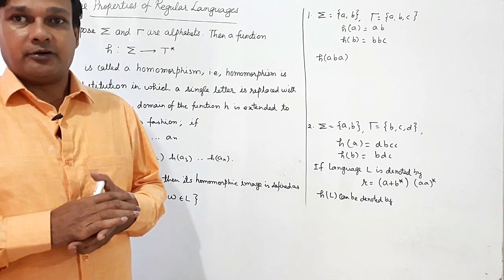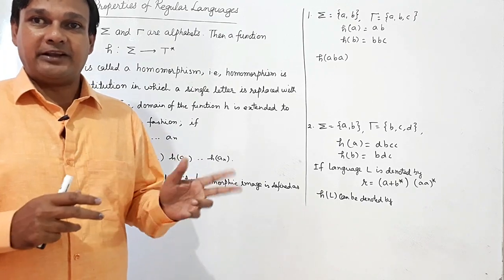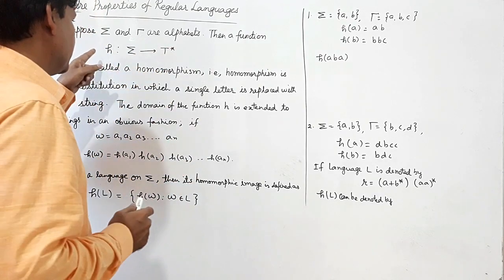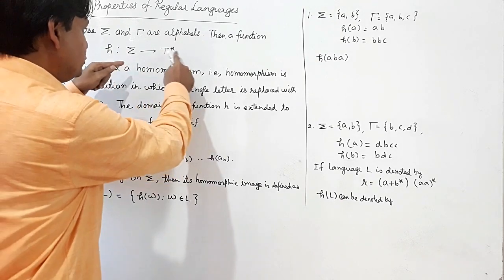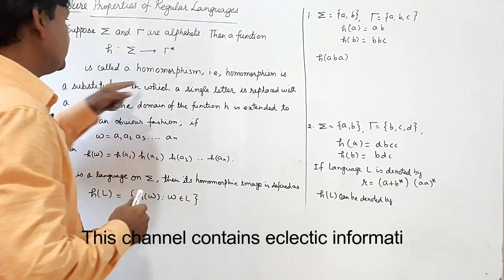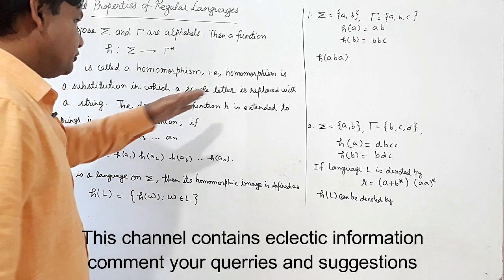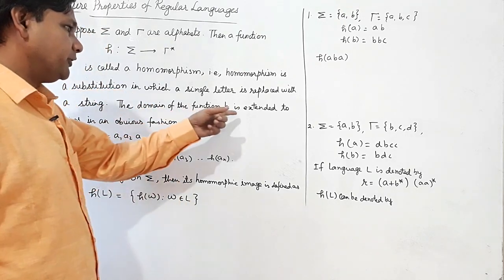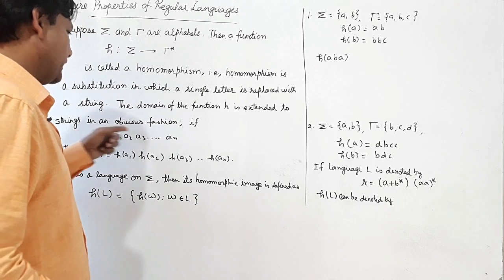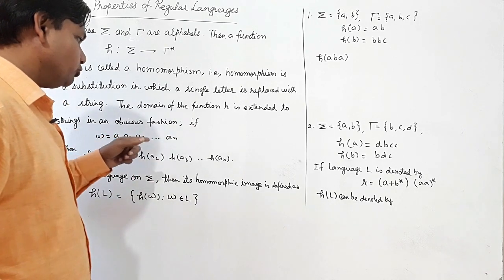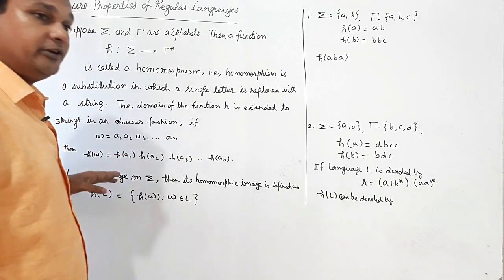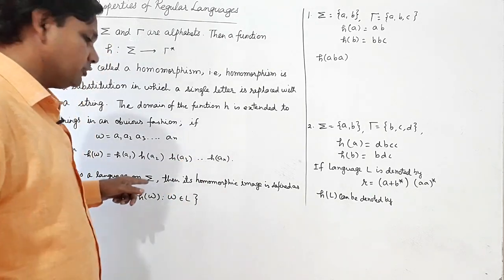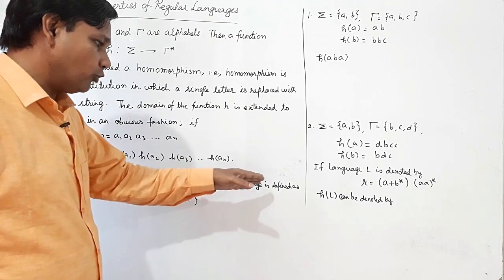In a homomorphism, a single letter can be replaced by a string. Suppose sigma and tau are alphabets, then a function h from sigma to tau-star is called a homomorphism. That is, a homomorphism is a substitution in which a single letter is substituted by a string. The domain of the function h is extended to strings: if w equals a1 a2 a3 ... an, then h(w) = h(a1) h(a2) h(a3) ... h(an).